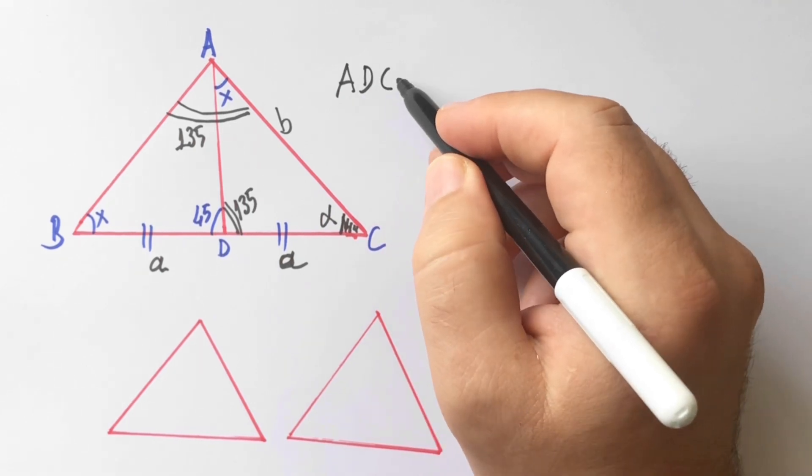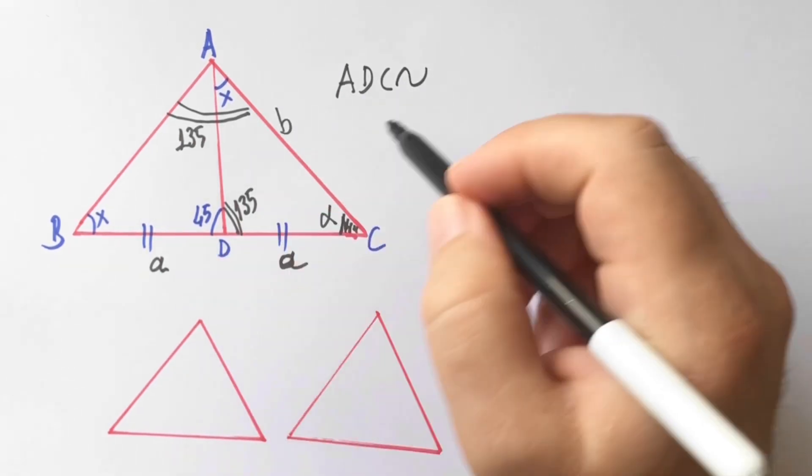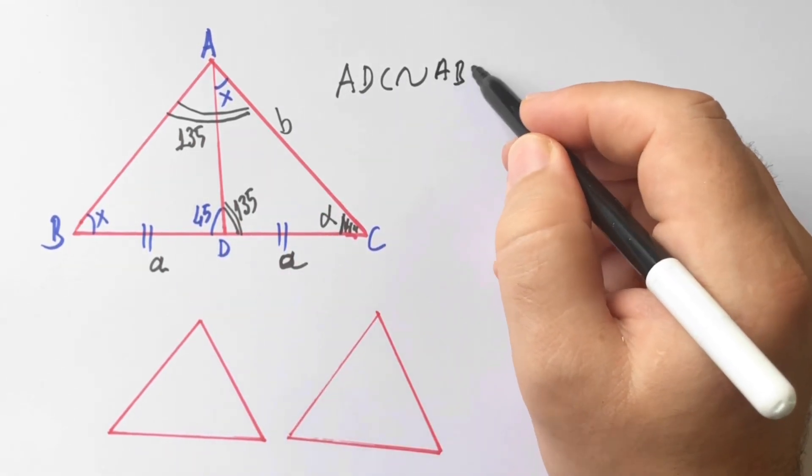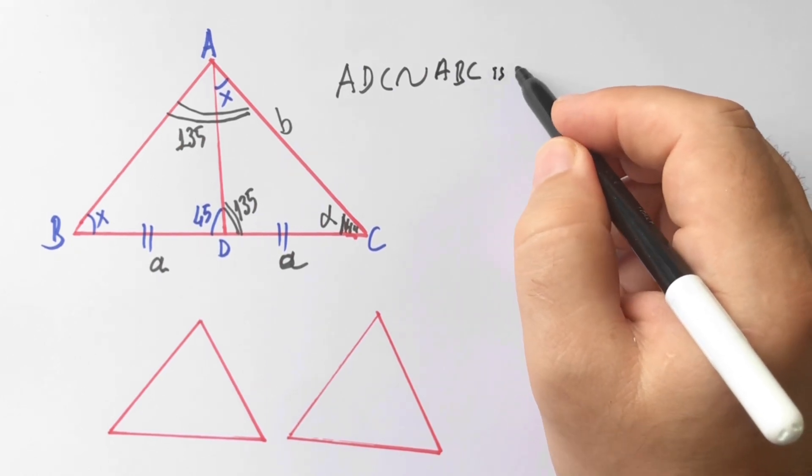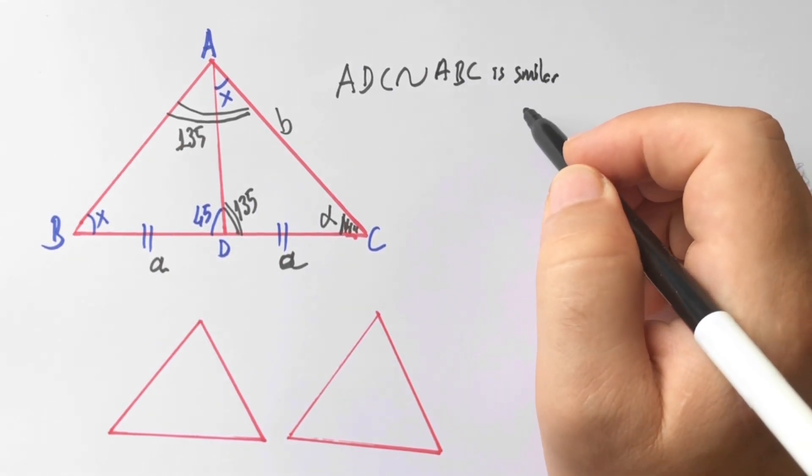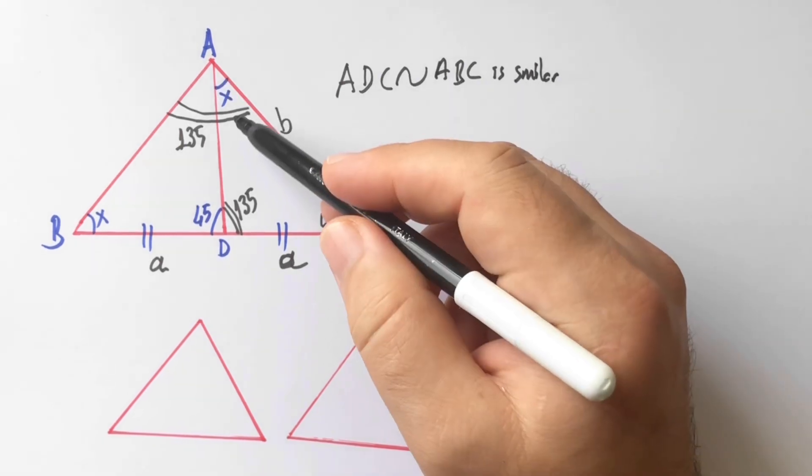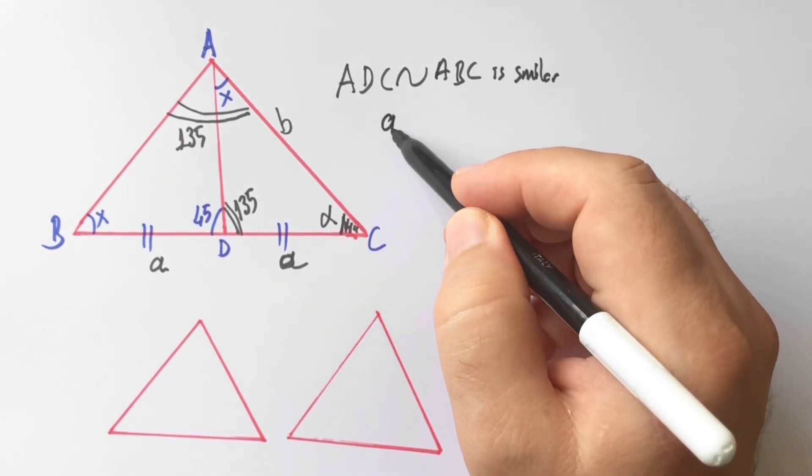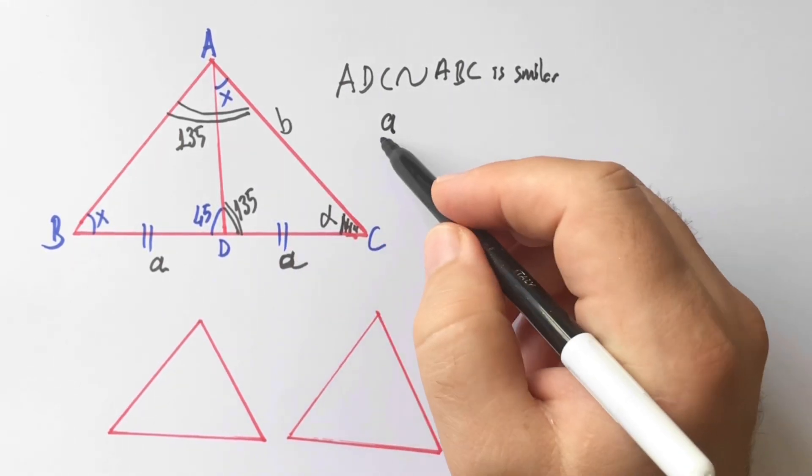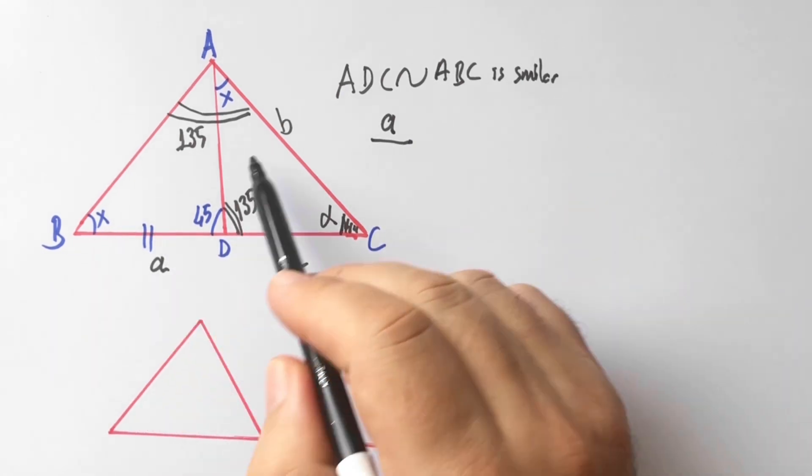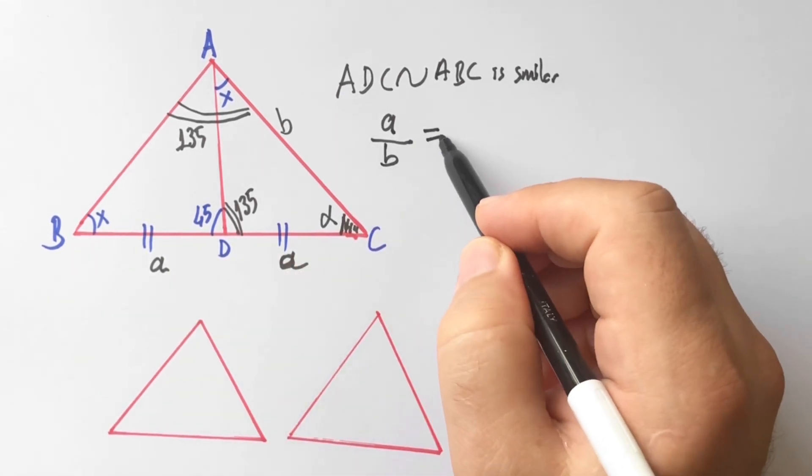So opposite of X is A, over opposite of X is B, equal to opposite of 125 degrees is B...